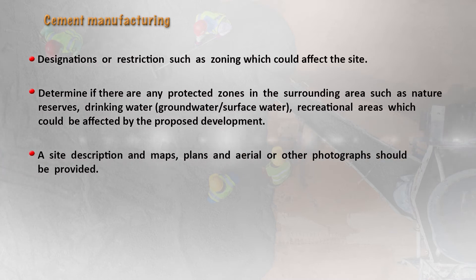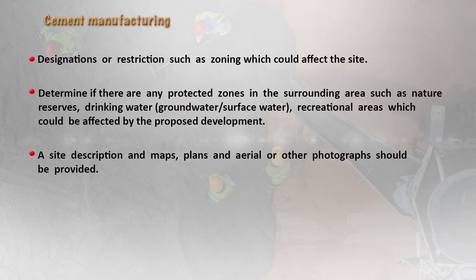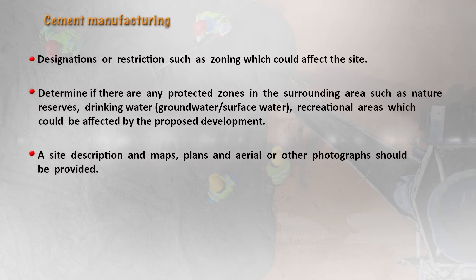The site description will be carried out using maps and plans. Aerial photographs can be used and provided. Geographical information systems (GIS) can be used, and remote sensing can also be employed so that the entire area can be mapped out and photographed well for proper planning and usage.